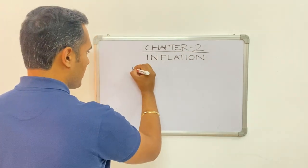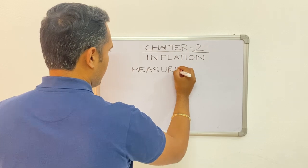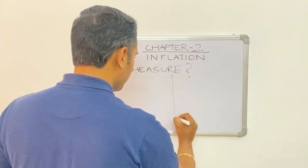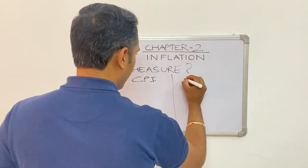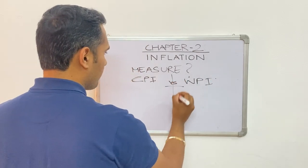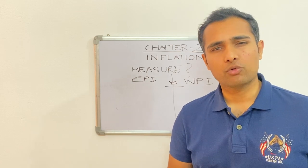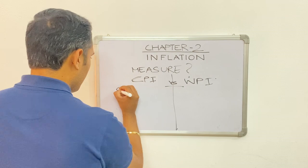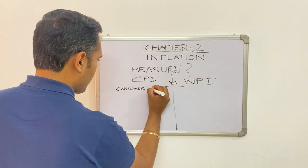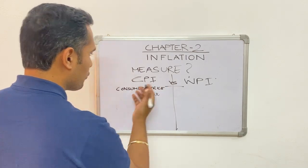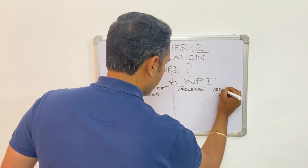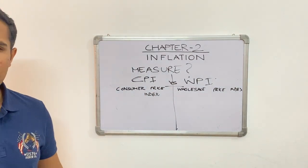Next, how do we measure inflation? What are the indicators? There are two main indicators: CPI and WPI. CPI stands for Consumer Price Index, and WPI stands for Wholesale Price Index. These are the two ways by which inflation is measured.